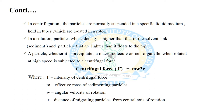The formula for centrifugal force is F = mω²r, where F is the intensity of the centrifugal force, m is the effective mass of the sedimenting particles, ω is the angular velocity of rotation, and r is the distance of migrating particles from the central axis of rotation.